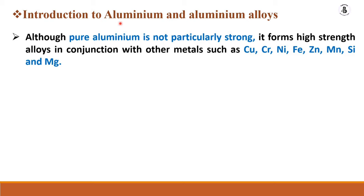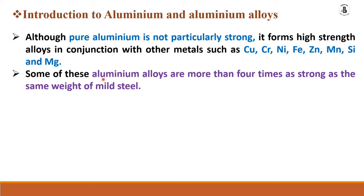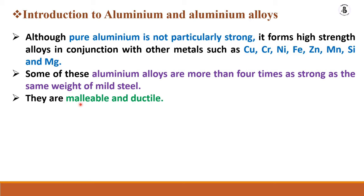These alloying elements are added to enhance aluminium's properties. Some aluminium alloys are more than four times as strong as the same weight of mild steel. So if you want high-strength, low-density materials, aluminium alloy is one of the best options to replace mild steel.